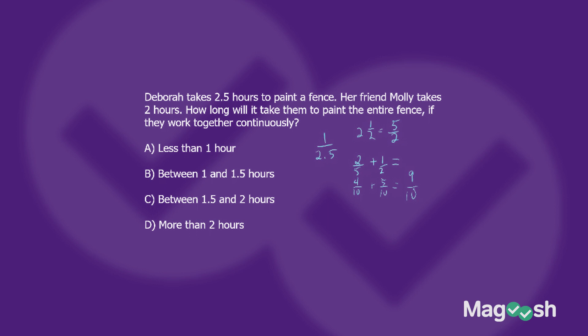But this is the FAF method, not the FA method — we always flip the final result. Flip nine-tenths and you get ten-ninths. The answer is not less than one hour; it is between one and 1.5 hours, because ten-ninths is slightly more than one. That is the answer.